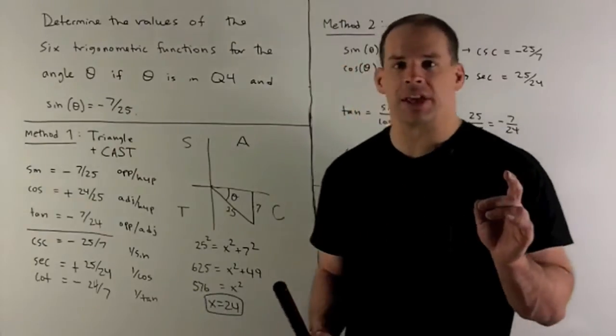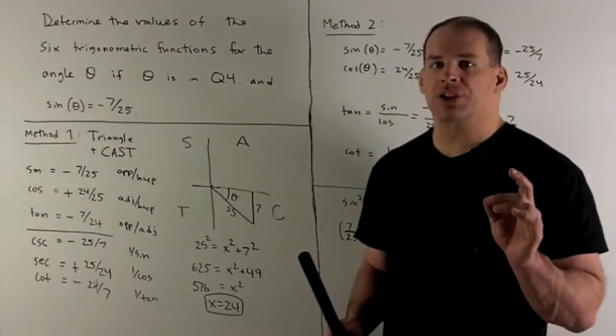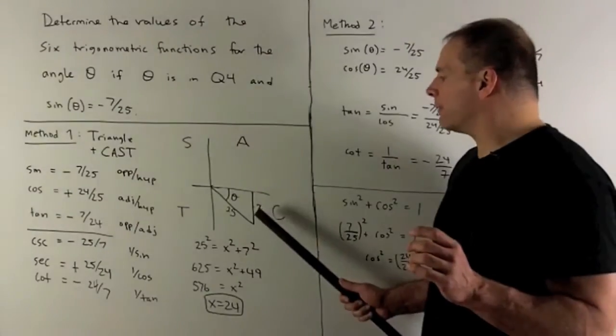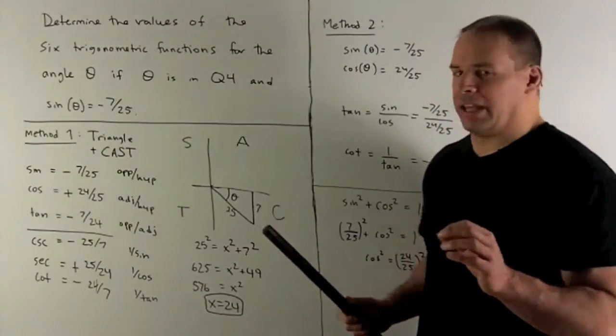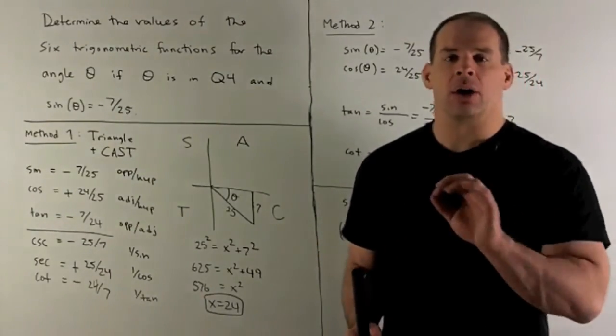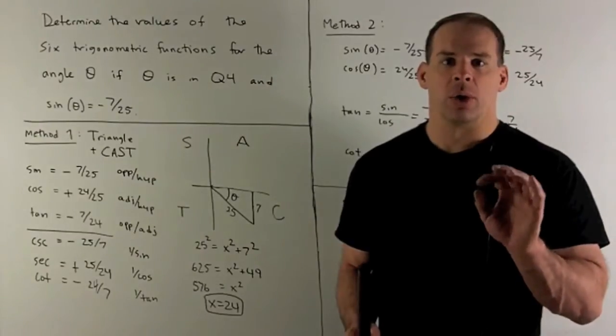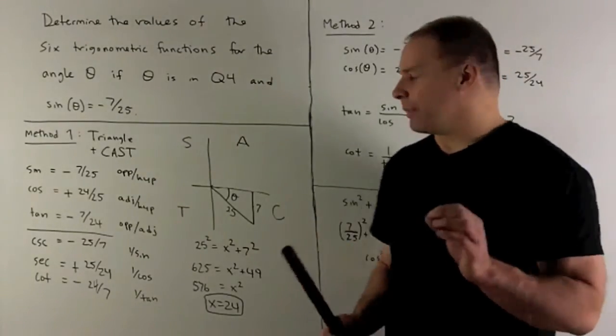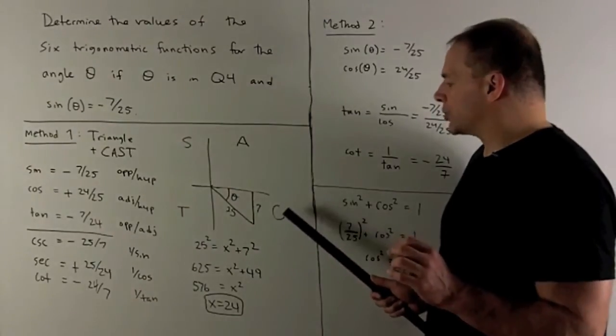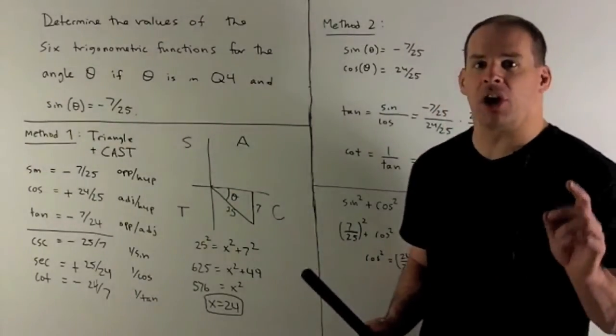I want to put the signs in, so we use CAST. The way CAST works, we start in quadrant four, and then the idea is we'll be told by the letter what the sign is going to be on cosine, sine, or tangent. If I'm in quadrant four, cosine is positive, sine and tangent are negative.